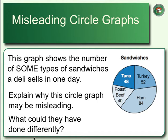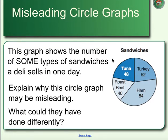Lastly, circle graphs have to show the entirety of the information. In this case, it should show all of the different types of sandwiches, but this only shows some of the sandwiches a deli sells. Looking at the pieces of the pie — tuna: 48, turkey: 52, roast beef: 40, ham: 84 — it's like they're telling us the total number of sandwiches sold rather than the percentages.